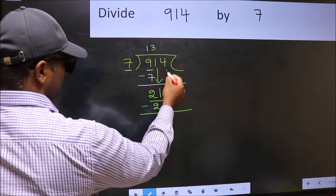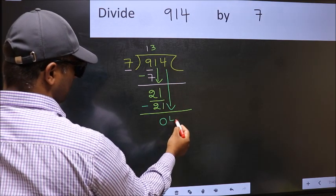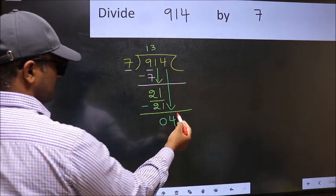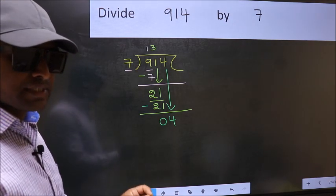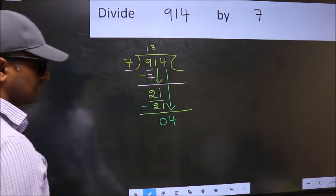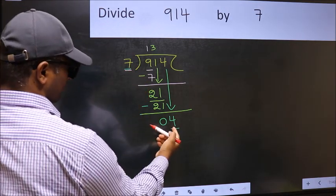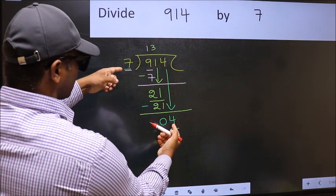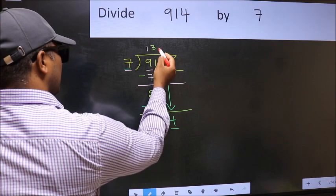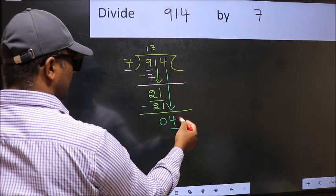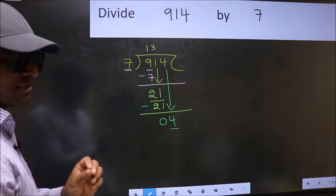After this, bring down the beside number. So 4 down. After this step, the mistake happens. And the mistake is this. Here we have 4 and here 7. 4 is smaller than 7. So what many do is, they directly put dot and take 0. Which is wrong.